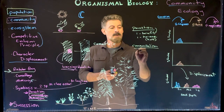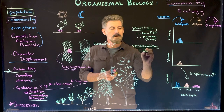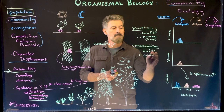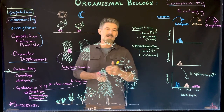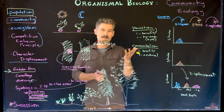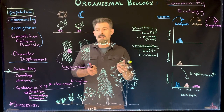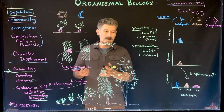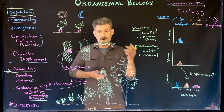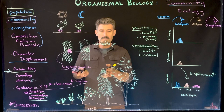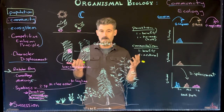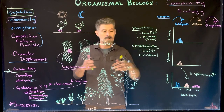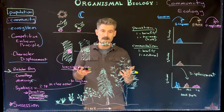In commensalism, one organism benefits and the other's relationship is neutral — they aren't really harmed by or benefiting from the presence of the other organism. Two organisms are living together, one living on or off the other, but the host organism isn't harmed in any particular way.